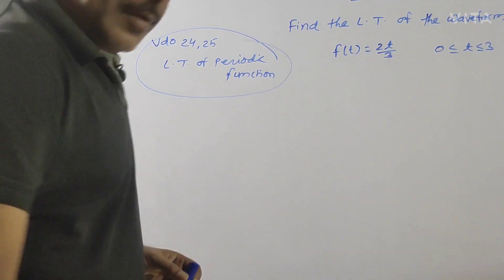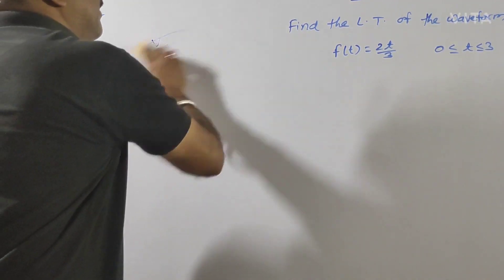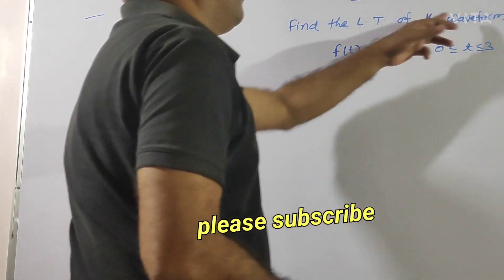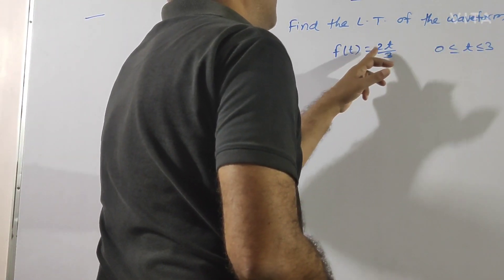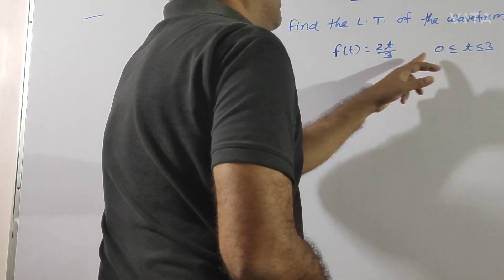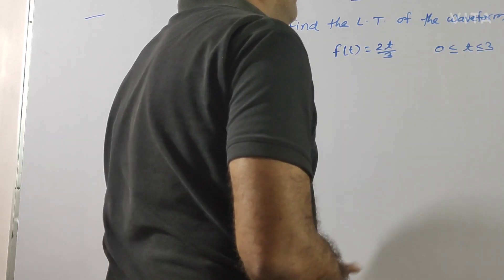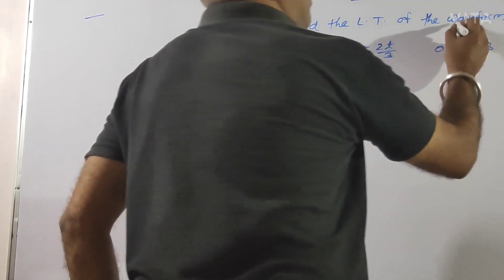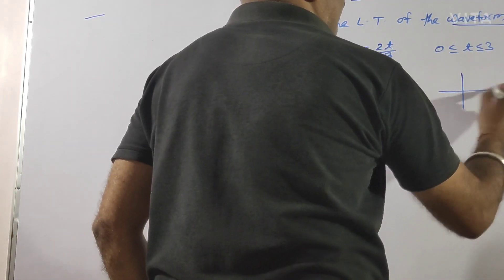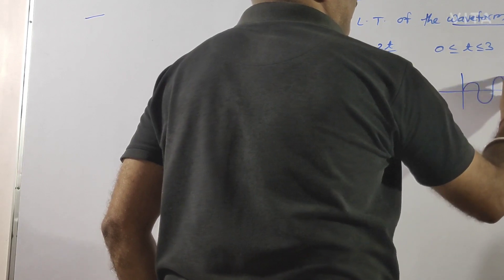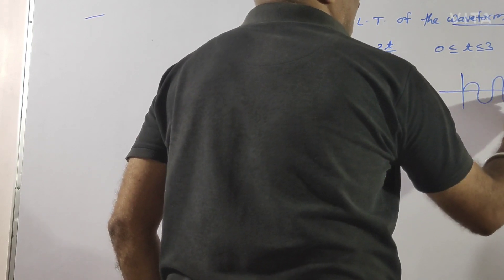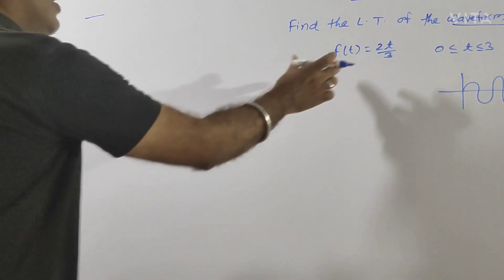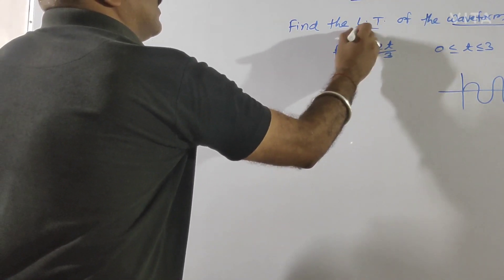इसमें एक question है. Find the Laplace transform of waveform. f(t) = 2t/3, 0 to 3. तो waveform जो रहता है, वो हर हमेशा periodic ही रहता है. तो यह periodic function का ही question है, इसका Laplace निकालना है.